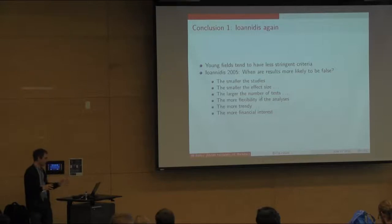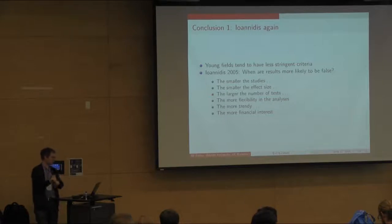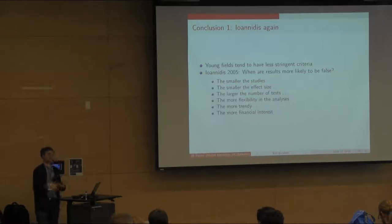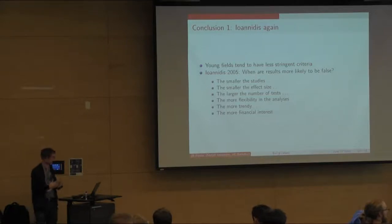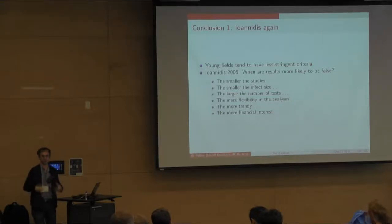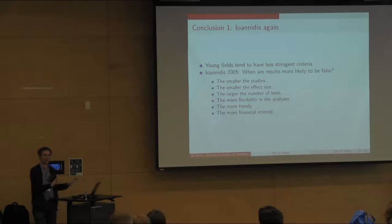When are results more likely to be false? The smaller the sample size, the smaller the effect size, the larger the number of tests — and we do a lot of tests in neuroimaging — the more trendy the field, the flexibility of our analysis (we saw the Carp study showing extremely flexible ways of doing analysis), the more trendy the field adding social pressure to be first, and financial interests — all those things push toward very low positive predictive values.